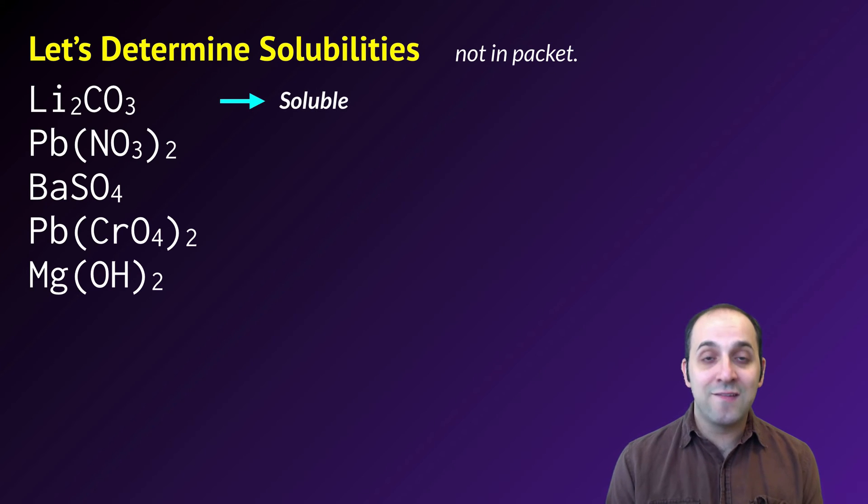So Li₂CO₃ is soluble. Carbonates are generally insoluble, but there are some exceptions. One of those exceptions is group 1 ions, of which lithium happens to be one, so it is a soluble compound. Lead 2 nitrate is also soluble. Nitrates are always soluble. There are no exceptions listed on the chart. So that nitrate is going to make the compound soluble, whatever it's bound to.